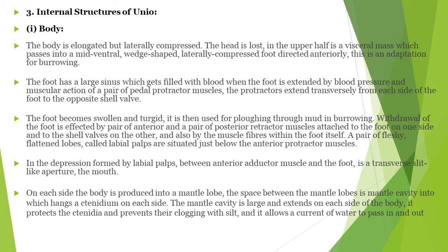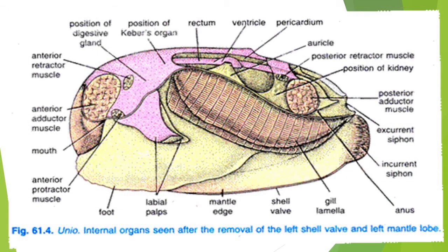Each side of the body is covered by the mantle lobe. The space between the mantle lobes is a mantle cavity into which hang the ctenidia on each side. The gills are present on both sides of the body within the mantle cavity. The mantle cavity is large and extended on each side of the body. It protects the ctenidia and prevents their clogging with silt, and also allows a current of water to pass in and out. In the posterior region, the excurrent and inhalant siphons are present. The muscular foot is present anteriorly, along with the protractor and retractor muscles.